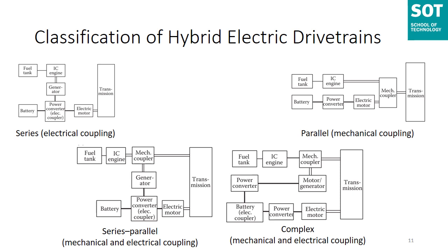The series-parallel configuration takes into account both mechanical and electrical coupling and is more complex. Its distinguishing feature is the employment of two power couplers: one mechanical coupler and one electrical coupler (the power converter). This configuration combines series and parallel structures, possessing the major features of both and more plentiful operation modes than series or parallel alone — incorporating both electrical and mechanical coupling. However, it is relatively more complicated and may be more expensive than either coupling alone. The complex hybrid configuration has a similar structure to the series-parallel one, but the electric coupling function is moved from the power converter to the battery; one more power converter is added between the motor-generator and the batteries.